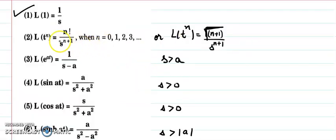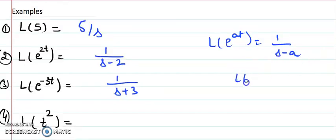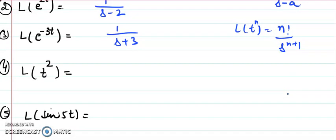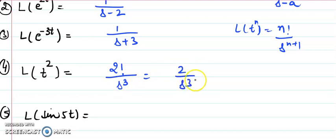For the Laplace transformation of t to the power n, the formula is n factorial over s to the power n+1. For t squared, n = 2, so it is 2 factorial over s cubed, which gives 2/s³. For t cubed it is 3 factorial over s to the power 4; for t to the power 10 it is 10 factorial over s to the power 11. The power of s is always 1 more than n.